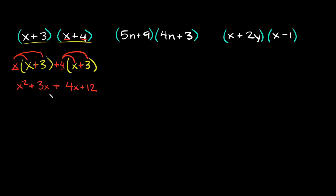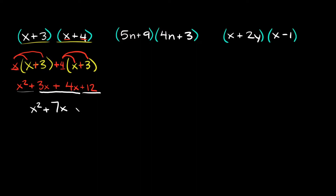So here we have x squared + 3x + 4x + 12. This is almost your final answer. The last thing you have to do is check to see if you can combine anything, which normally will be these two middle terms right here. So 3x + 4x combines to be 7x. So your final answer is x squared + 7x + 12.